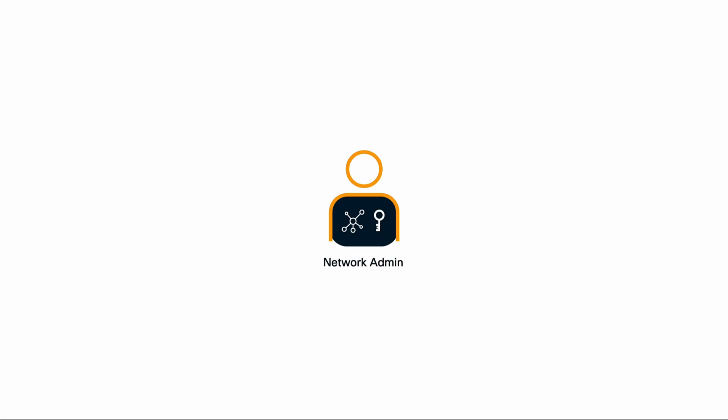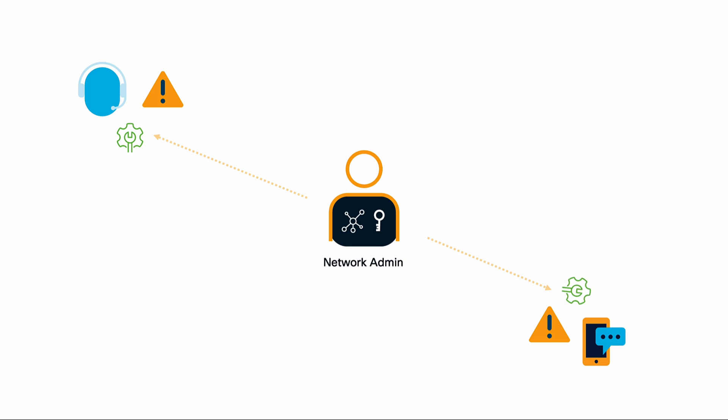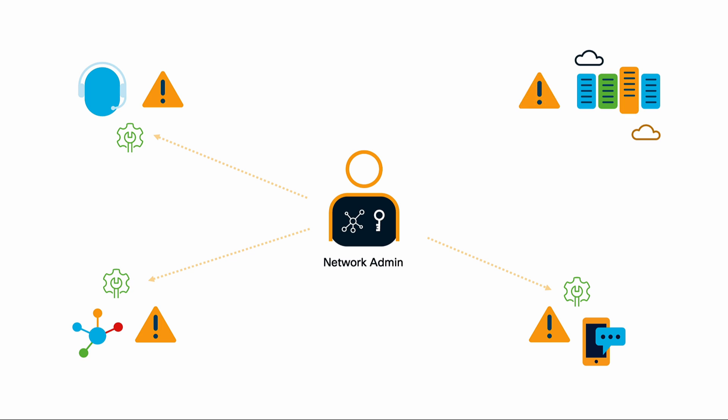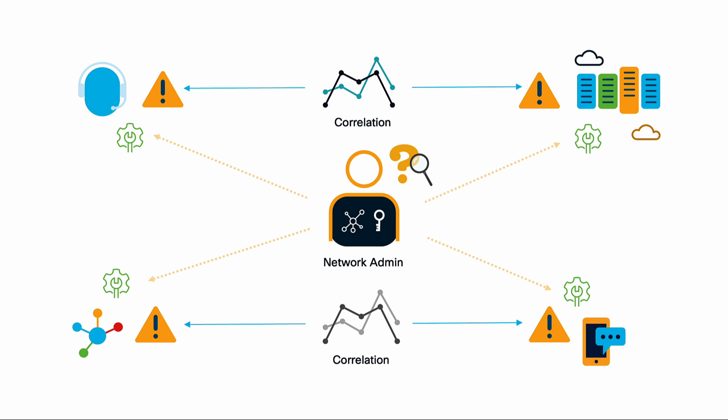Well, as you know, network admins are always the first ones to be blamed when a problem happens until they prove differently. In today's world, organizations have disaggregated tools for network management and monitoring on a per-cloud or per-site basis. This means the network admin role is under more pressure than ever, since people expect us to fix communication problems, but most of the time we don't have visibility everywhere and manual correlation is extremely difficult to perform.